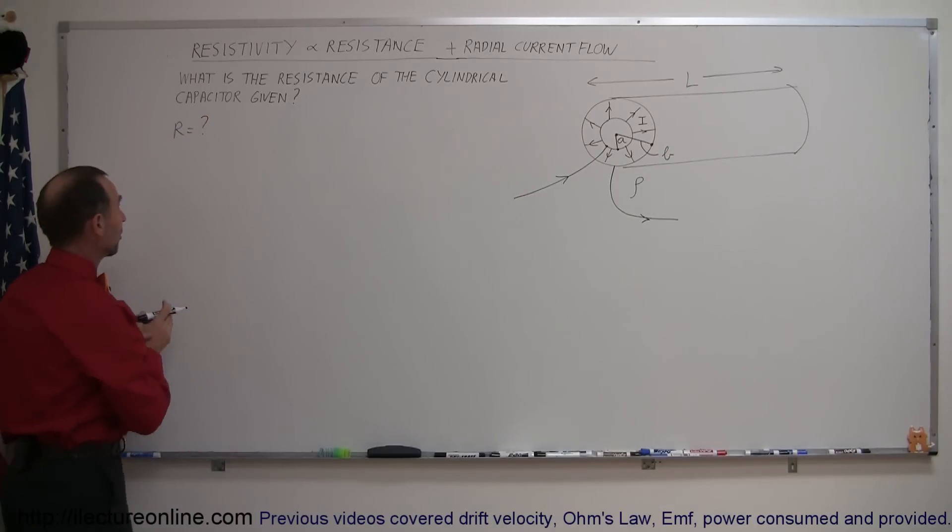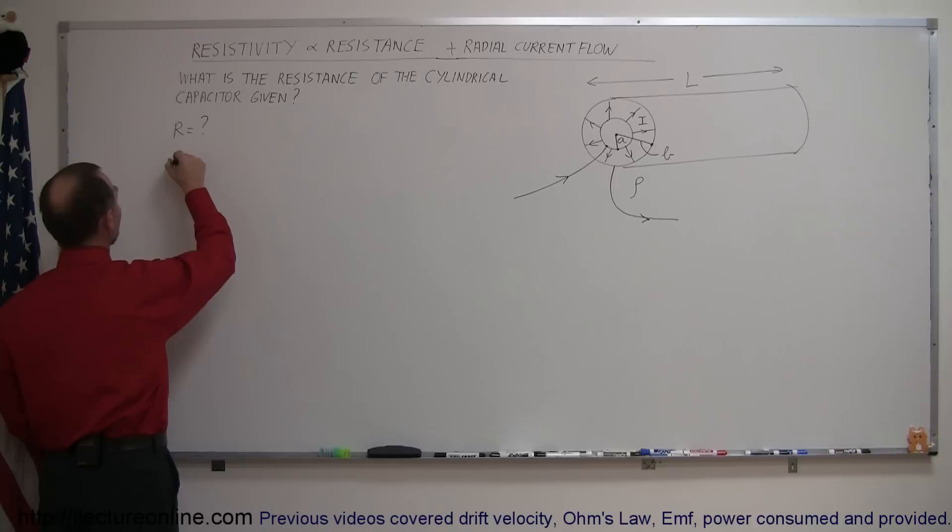Going back to the basic equation for resistance, knowing the resistivity, we can say that R is equal to rho, the resistivity, times the length divided by the cross-sectional area A.